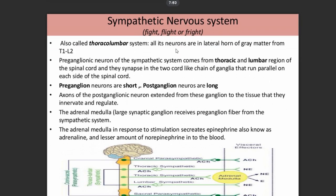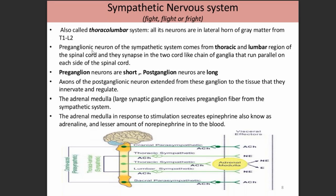The sympathetic nervous system is also called the thoracolumbar system because all its neurons are located in the lateral horn of the gray matter from thoracic segment T1 to lumbar segment L2. Preganglionic neurons of the sympathetic system arise from T1 to L2 spinal segments and synapse in two cord-like chains of ganglia that run parallel to the spinal cord.